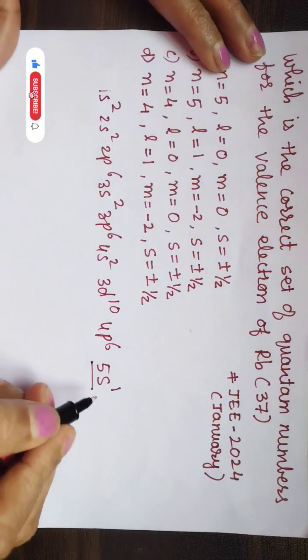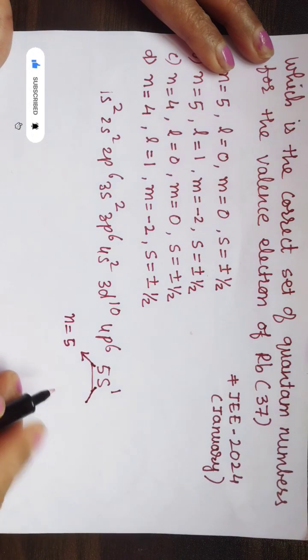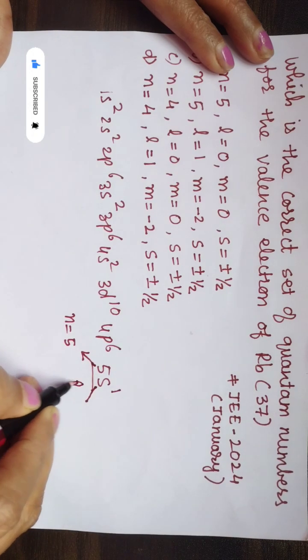Now if you see this, this indicates the principal quantum number. Therefore n is equal to 5 here. This gives you the azimuthal quantum number, and this gives you the l quantum number, that is azimuthal, whose value is 0.